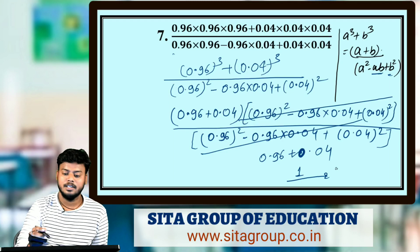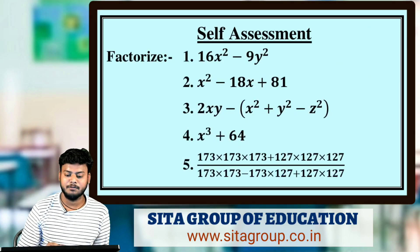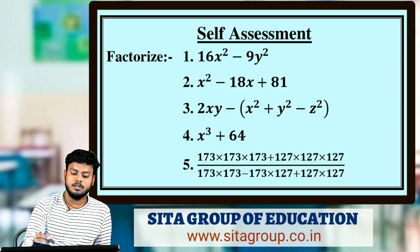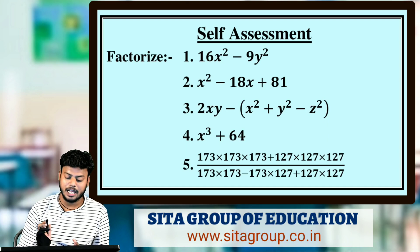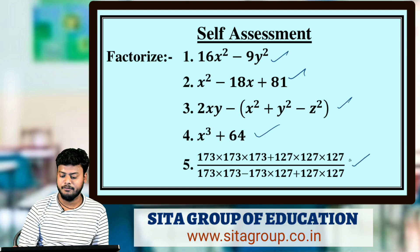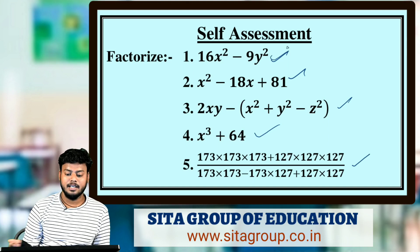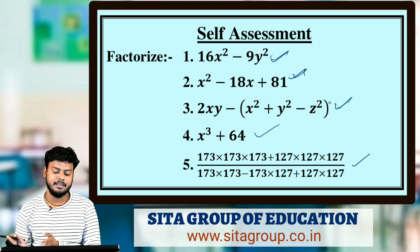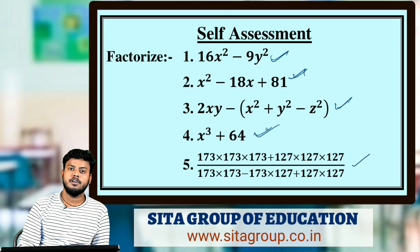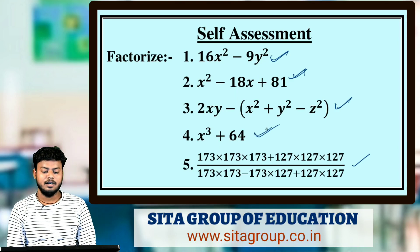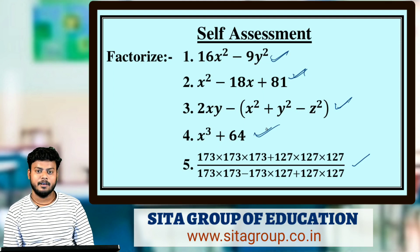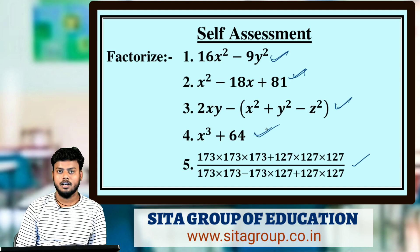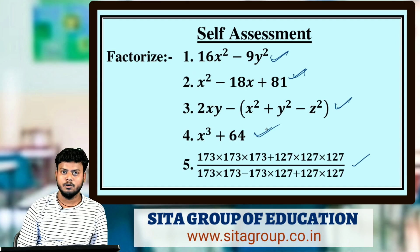Similarly, you can solve these types of questions. I will give five homework questions for you to solve at home. The hints are: first, a² - b²; second, check the identity; third, open the bracket first and then apply the formula — for example, a³ + 64 where 64 = 4³, then apply a³ + b³. The fifth question is similar to question 7. In the next video, we will solve more questions based on polynomials. Thank you so much.